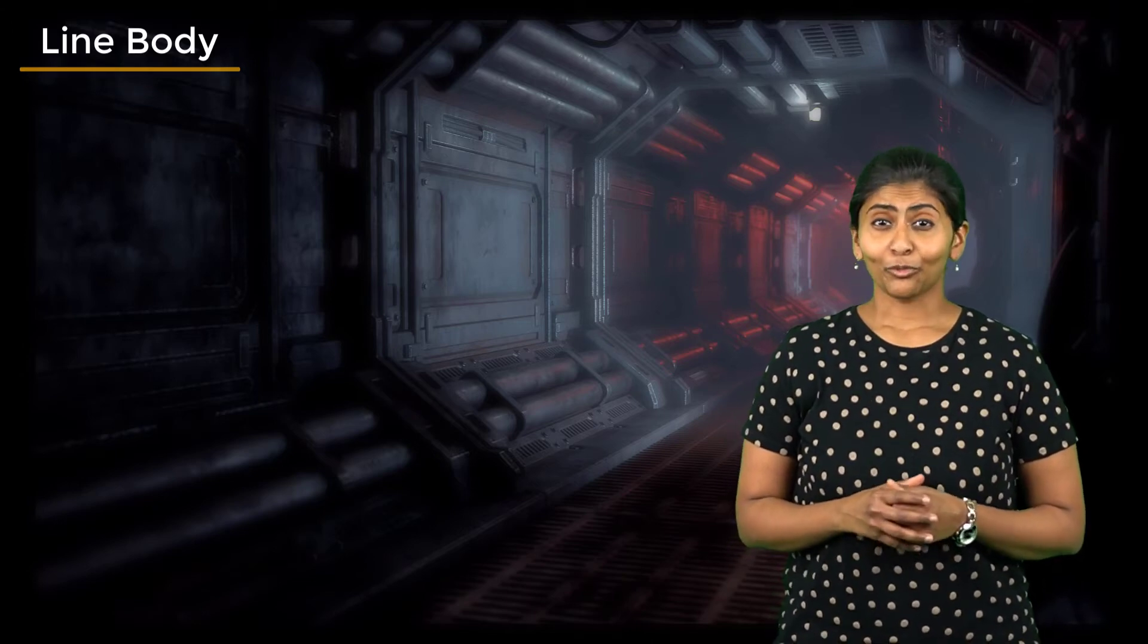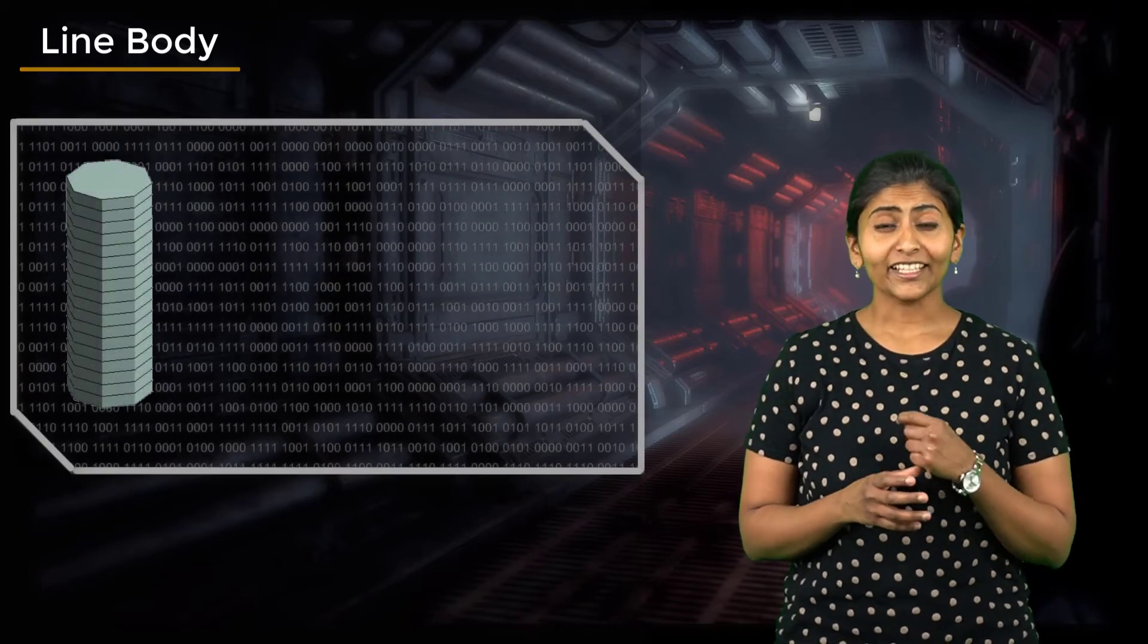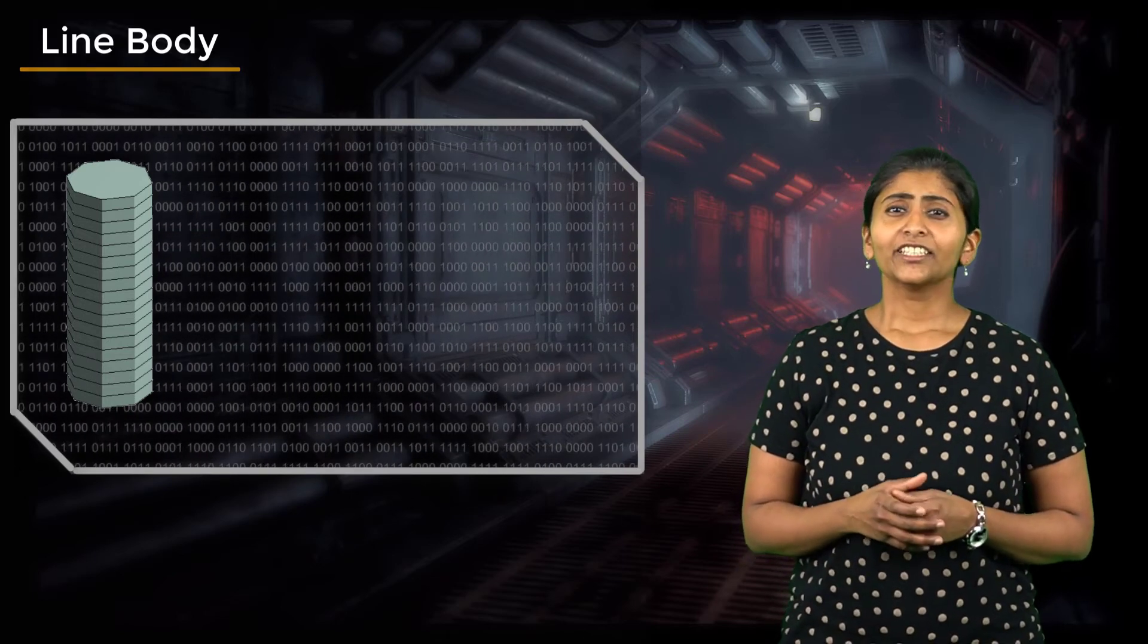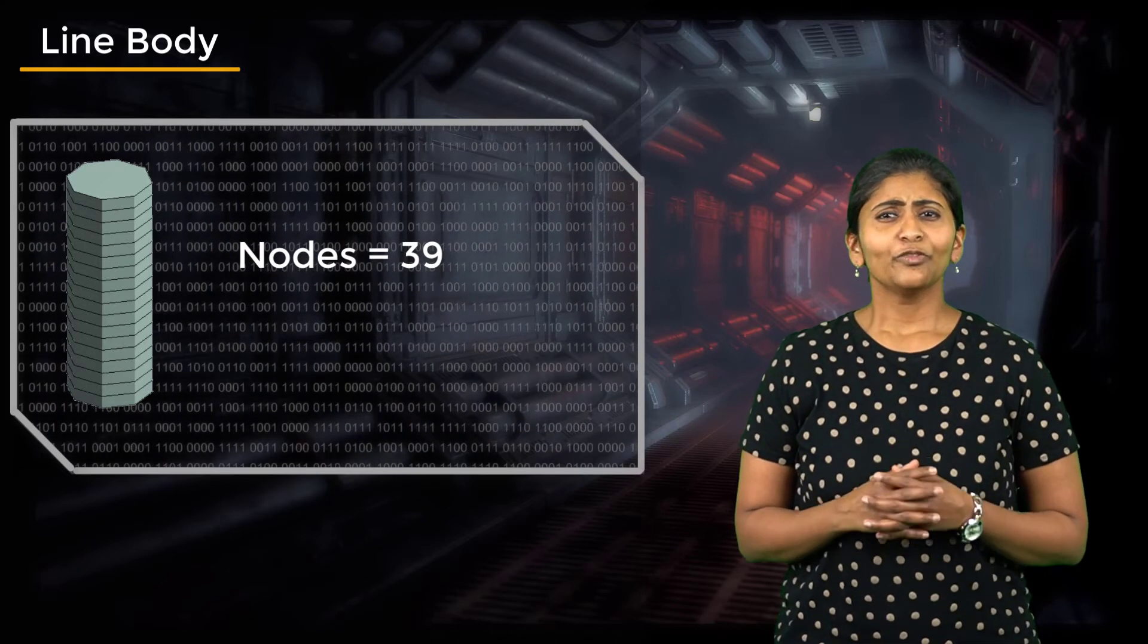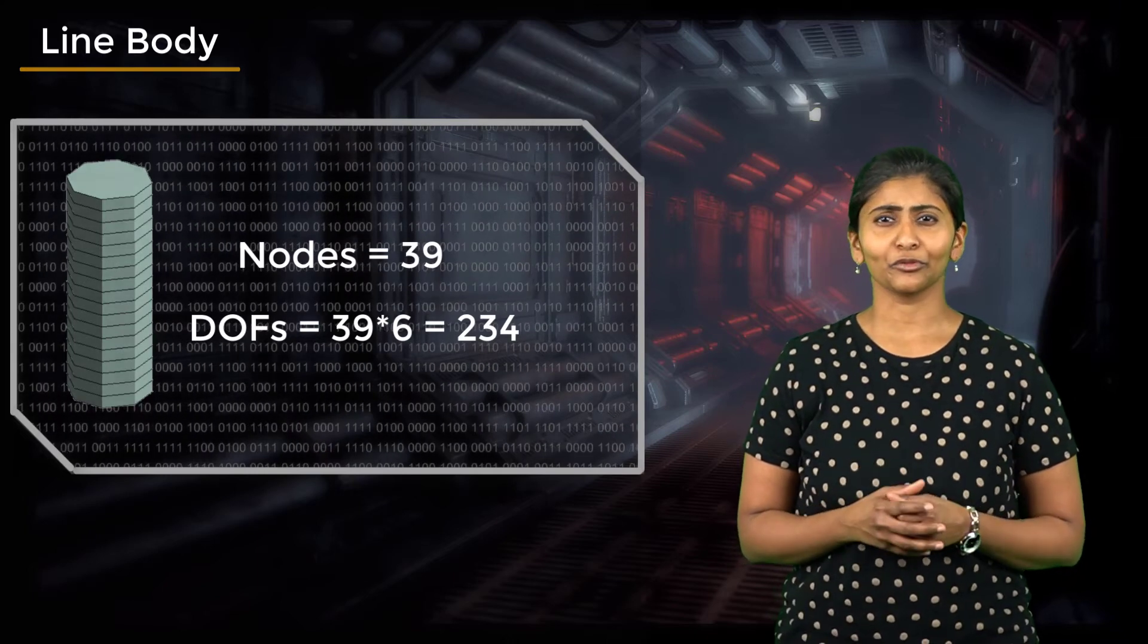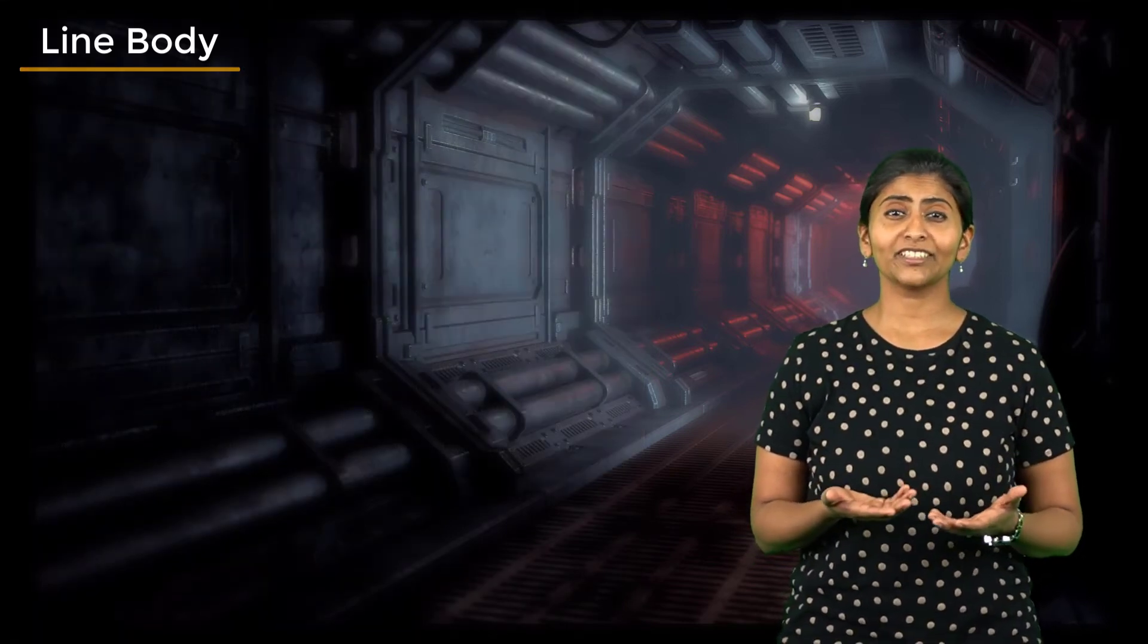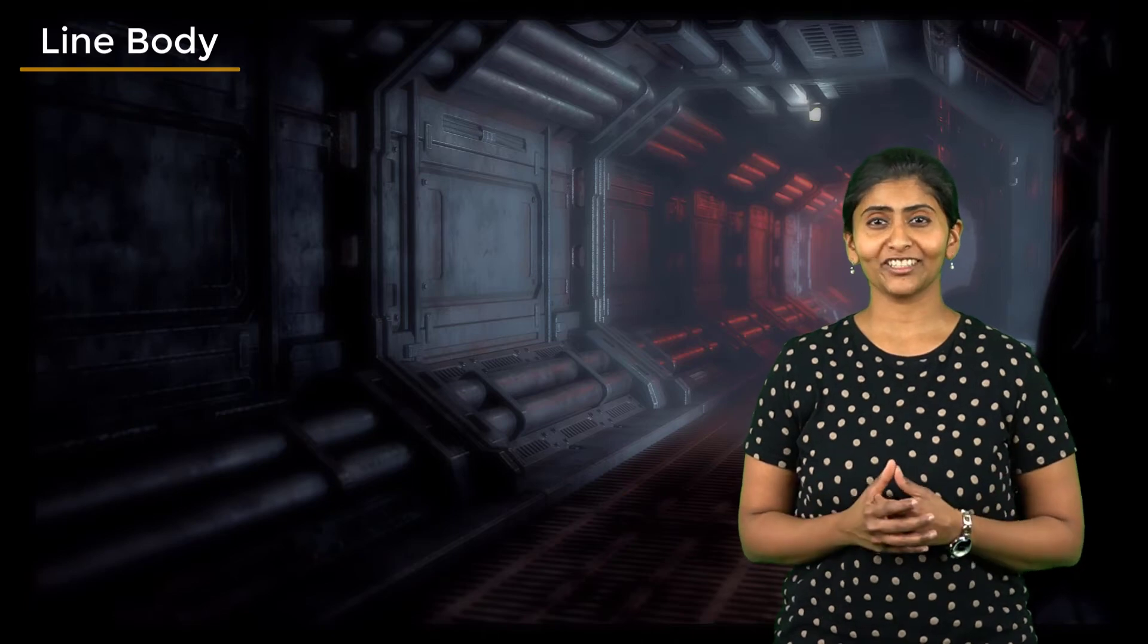Let's come back to the bolt example we saw previously. If we represent the same bolt as a line body and mesh it with beam elements of size 3 mm, the total number of nodes we get is 39. With each node of the beam element having 6 degrees of freedom, the total degrees of freedom for the bolt is just 234. Compare this with the 37,800 degrees of freedom that we got when we represented the bolt as a solid body. That is a huge reduction in computational cost.